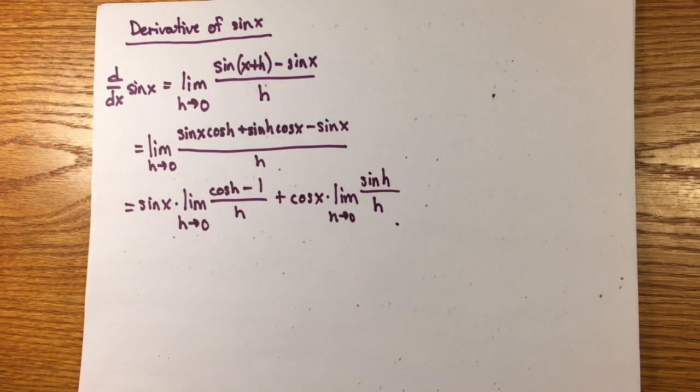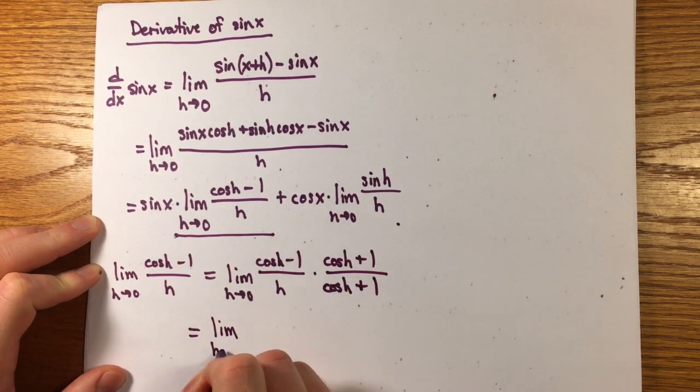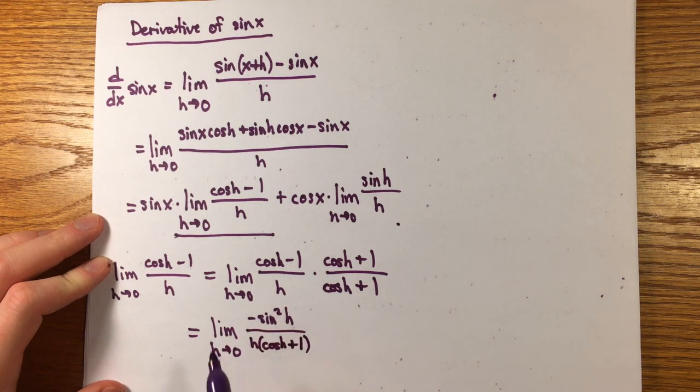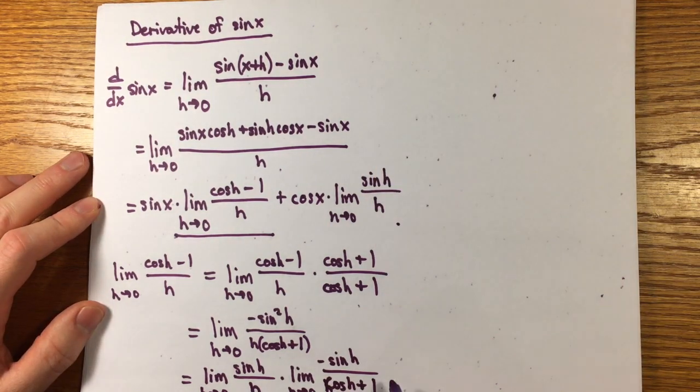So, there are a few ways we can dispense with limit cosine h minus 1 over h as h goes to 0. For example, we can manipulate this quantity using identities to reduce the computation to showing that the other limit, sine x over x, exists, and if so, this limit is equal to 0.